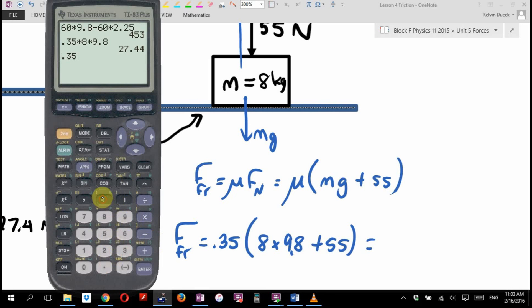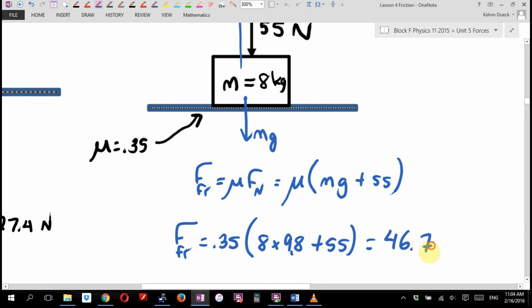You could type it like this. 0.35 bracket 8 bracket 9.8 bracket plus 55. I just find all these brackets confusing. So this is why I almost always on my calculator use a times sign for timesing. It's just less to keep track of. I mean, that works. No, I typed it in wrong. I stand corrected. It gives me the 46.7. But do yourself a favor. Type easier. 46.7 what? It's a force. Newtons.